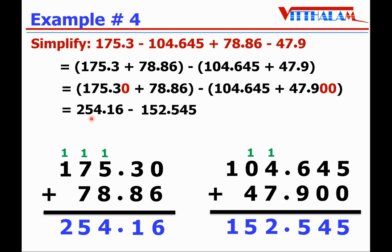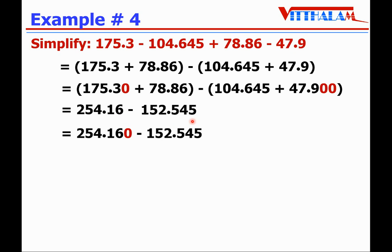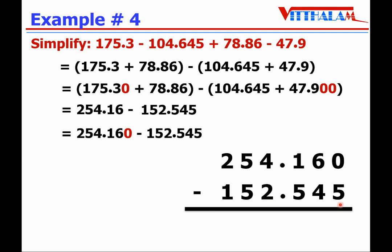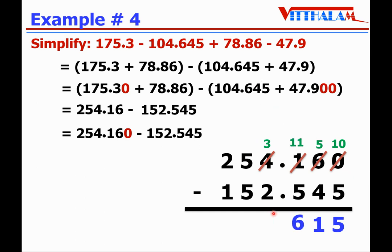Now subtract: 254.160 minus 152.545. Make them like — annex one zero to get 254.160. 0 is smaller than 5, borrow from 6 — 6 becomes 5, 0 becomes 10. 10 minus 5 is 5. 5 minus 4 is 1. 1 is smaller than 5, borrow — 4 becomes 3, 1 becomes 11. 11 minus 5 is 6. Put the decimal point. 3 minus 2 is 1. 5 minus 5 is 0. 2 minus 1 is 1. The required difference is 101.615, which is the answer.